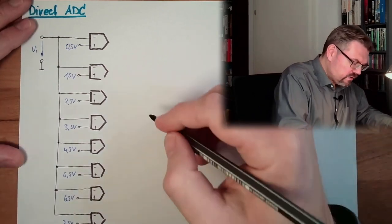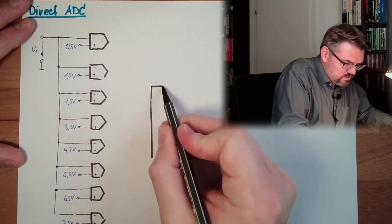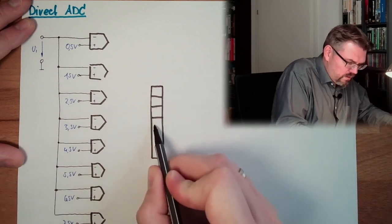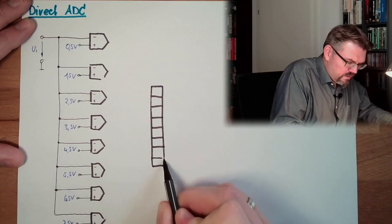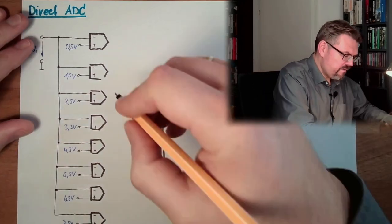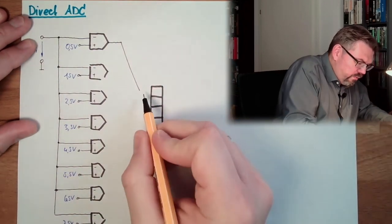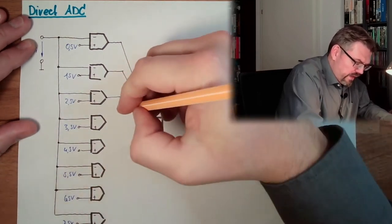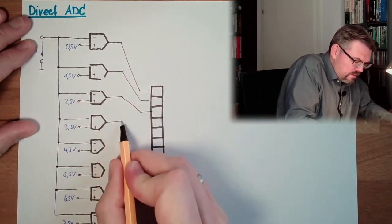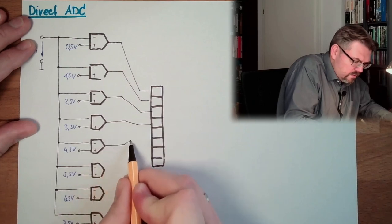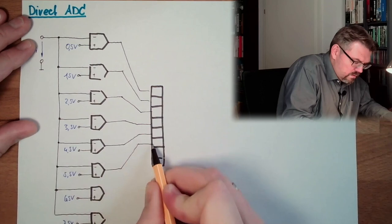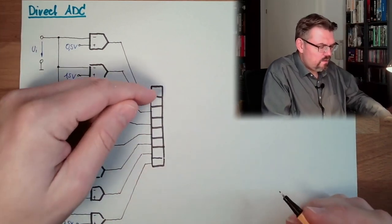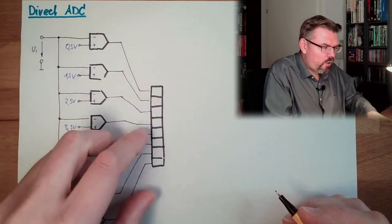And this growing number of 1s we will put into a memory. 1, 2, 3, 4, 5, 6, 7, 8. Every comparator will put its 0 or 1 into this memory. And we will see, then, a growing pattern of 1s. This is called here, unary code.